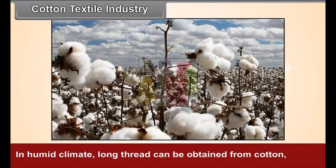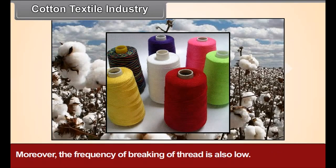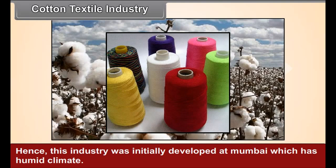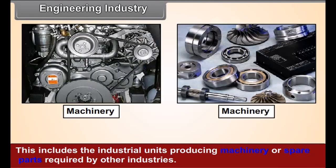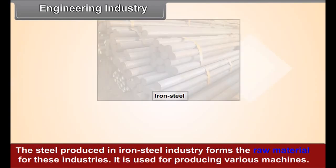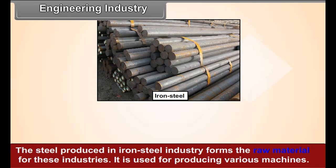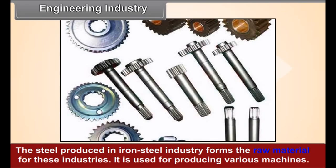In humid climate, long thread can be obtained from cotton. Moreover, the frequency of breaking of thread is also low. Hence, this industry was initially developed at Mumbai, which has a humid climate. Engineering industry includes industrial units producing machinery or spare parts required by other industries. The steel produced in iron and steel industry forms the raw material for these industries, used for producing various machines. Therefore, engineering industries are generally located in areas where metal industries providing raw materials are present.